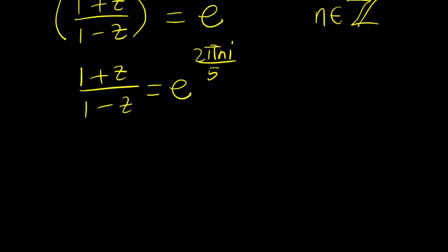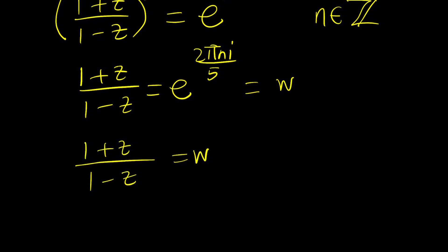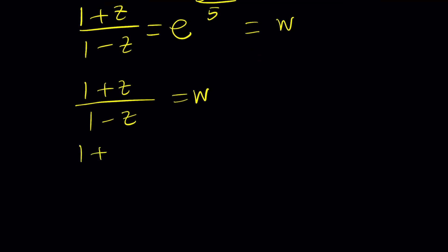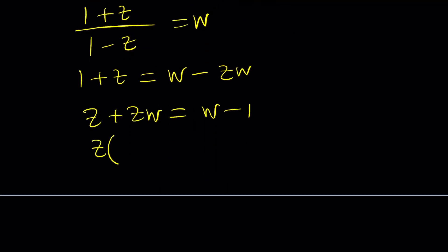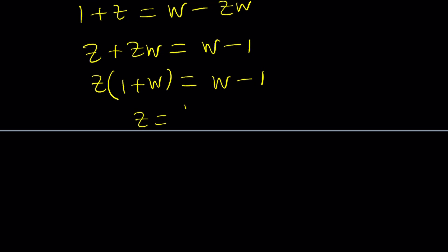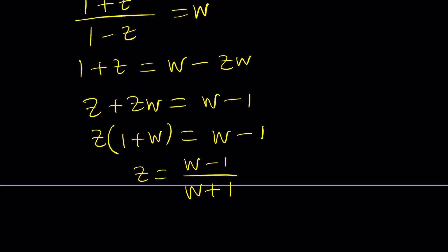How do you solve for z from here? Let's call the right-hand side w, and then solve for z in terms of w — it's kind of like finding the inverse function. So 1 plus z equals w minus zw, and our goal is to solve for z. Putting z plus zw together and w minus 1 together, factoring out z, gives us z times (1 plus w) equals w minus 1. Therefore z equals w minus 1 over w plus 1.